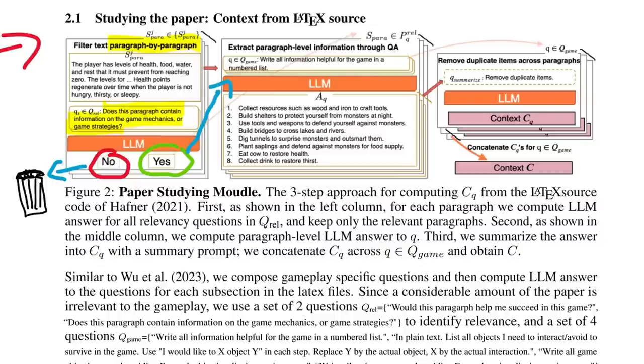But if the answer is yes, then there are up to four follow-up questions that are asked. For example, write all information helpful for the game in a numbered list. And these questions are continued for every paragraph until there is a giant database of information about the environment and what the agent should be doing. All this information is then deduped and concatenated into one long context string. So that's what the first step does. It basically just collects and gathers a whole bunch of hopefully useful information about the environment.